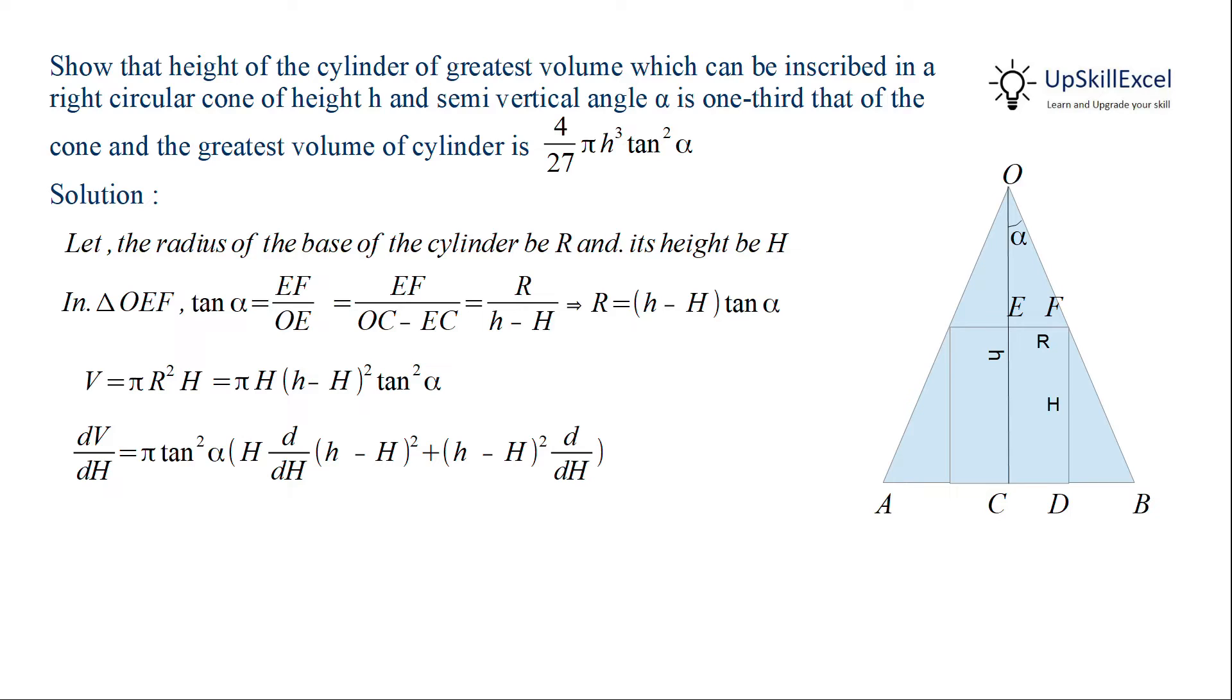Now we will differentiate the volume with respect to height. As there are two terms in product H and h minus H whole square, we will apply here product rule differentiation where derivative of H is equal to 1 and derivative of h minus H square will be 2 times h minus H multiplied by minus 1. Hence we get derivative of volume equal to pi tan square alpha H minus h multiplied by h minus 3H.